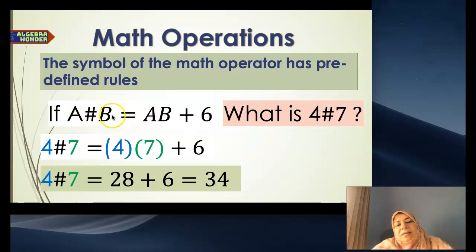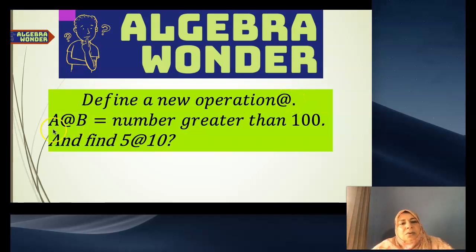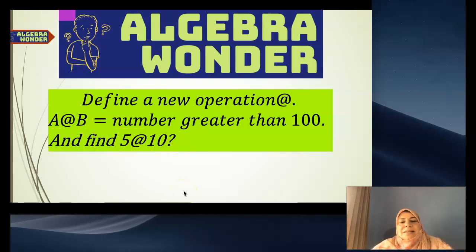This is one that you define with your friend, but for standard math operations, mathematicians all agree on them. Have fun and define a new operation. We're going to call this sign here the Amberset. So A Amberset B equals a number greater than 100. Define that and then find 5 Amberset 10. Think about it, discuss it with your classmates and your family. Don't forget to write in the comments. Thank you!